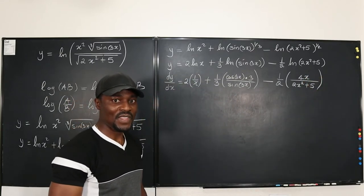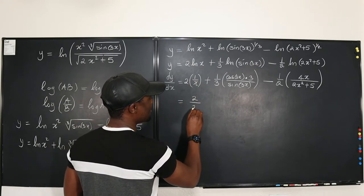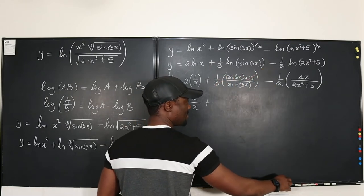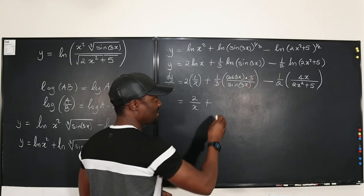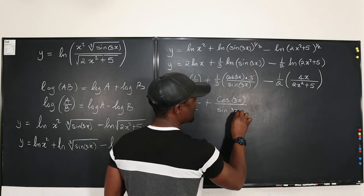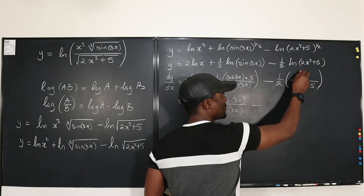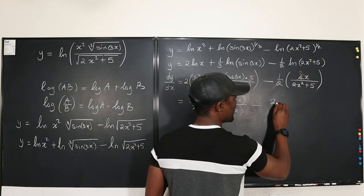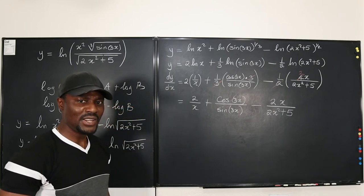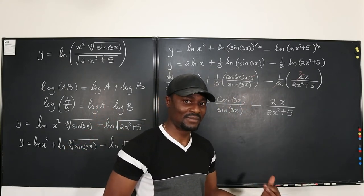Now let's clean up. dy/dx is going to be 2 over x, plus — the 3 from cosine 3x cancels with the one-third — leaving cosine 3x divided by sine 3x, minus — the 2 from 4x cancels with the one-half — leaving 2x divided by 2x squared plus 5. This is not as bad as it would have been using the quotient rule, where you'd have to simplify and mix things up. This is cleaner.